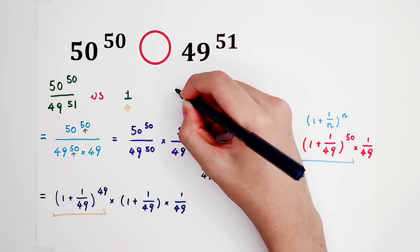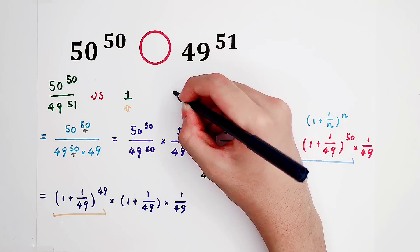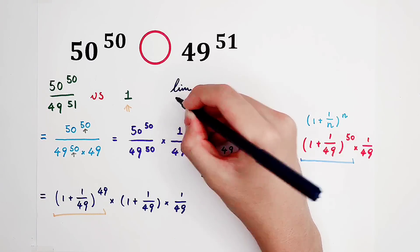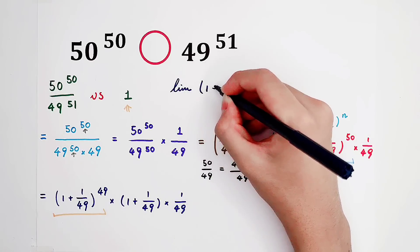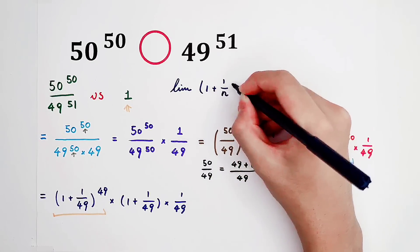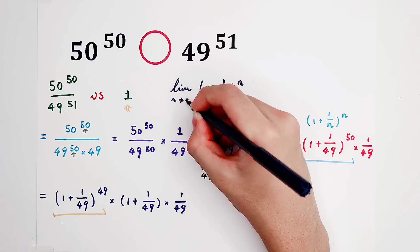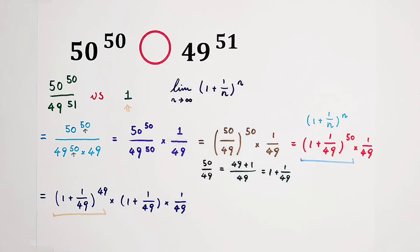The definition of Euler's number e is the limit of 1 plus 1 over n, all to the power of n, as n tends to infinity. The answer is e.